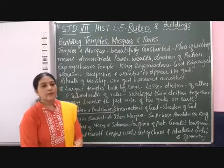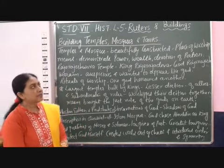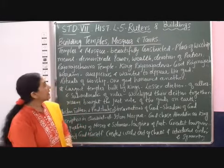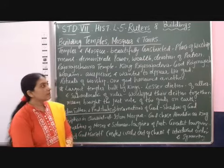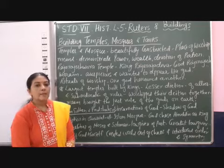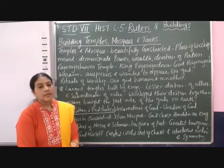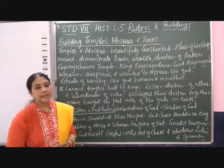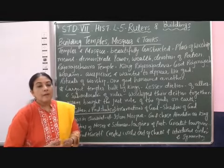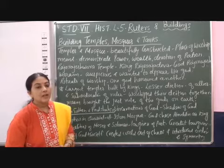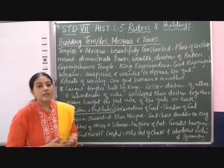In this module, let us study about building temples, mosques and tanks. Temples and mosques were beautifully constructed because they were places of worship. The more beautiful the temple, the more it shows the power, wealth or devotion of the ruler.